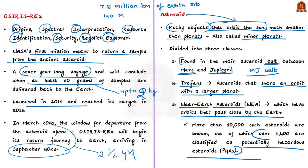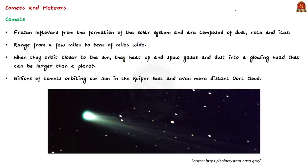By the current definition, Bennu is classified as a potentially hazardous asteroid — meaning it has the potential to make a close approach to Earth. However, this does not mean these objects will necessarily impact Earth; they are studied and observed to improve predictions of the risk of impact. Now let's look at comets and meteors. Comets are frozen leftovers from the formation of the solar system, composed of dust, rock, and ice.